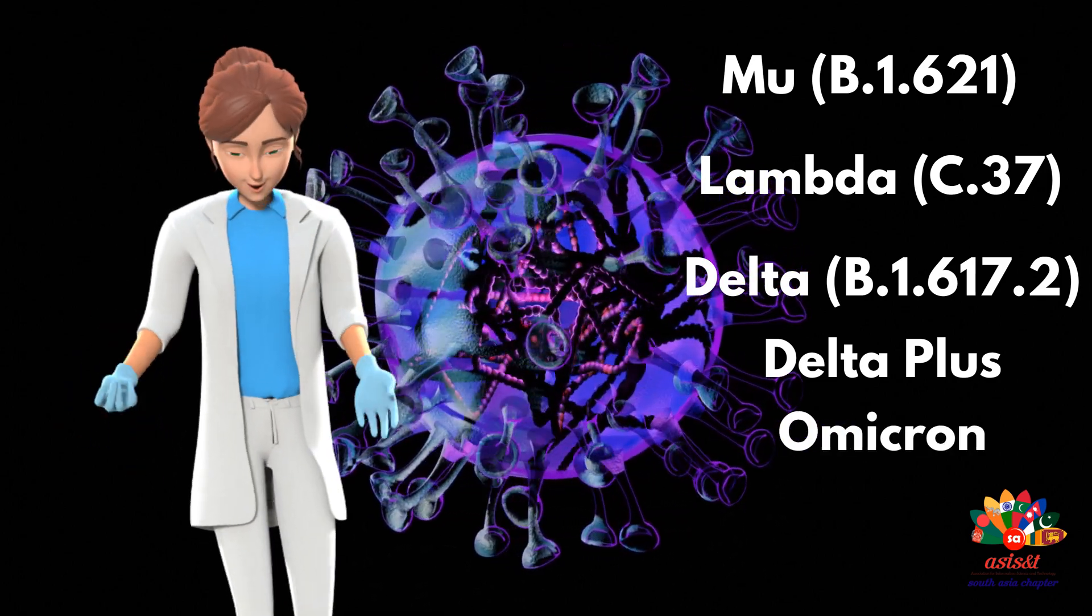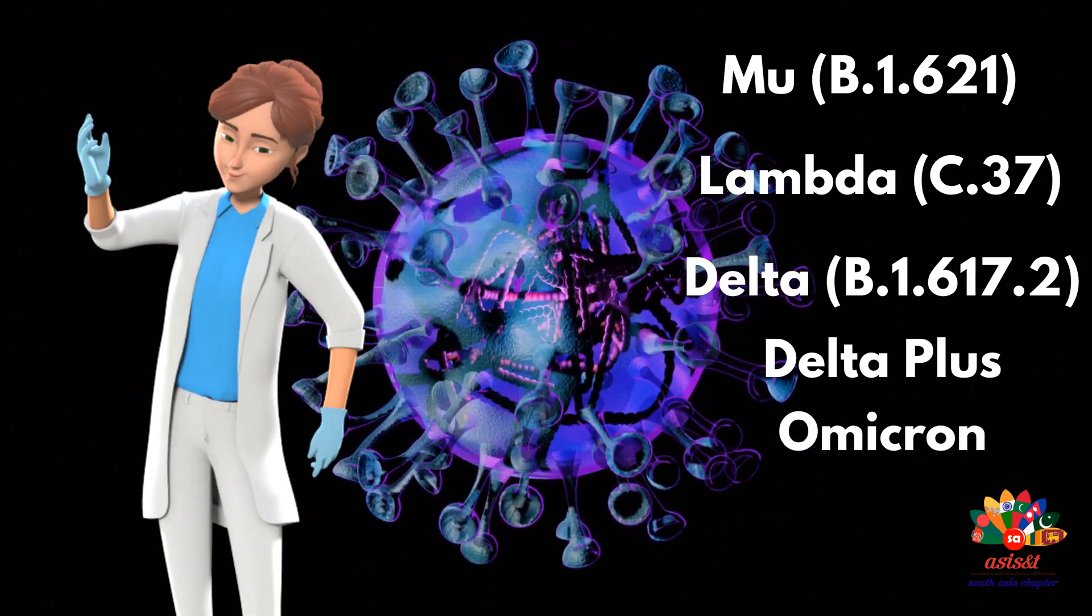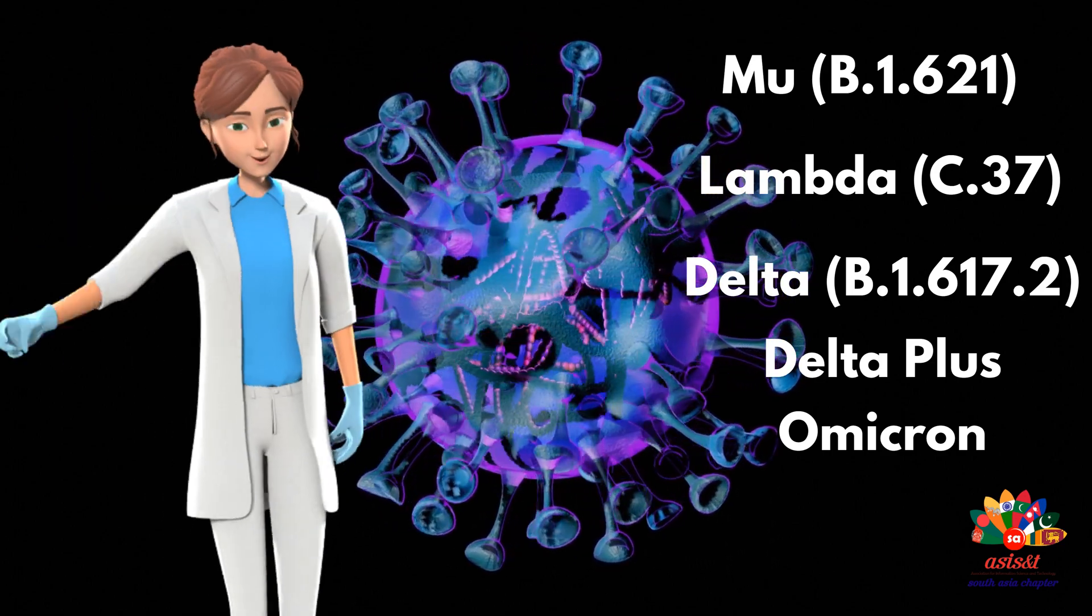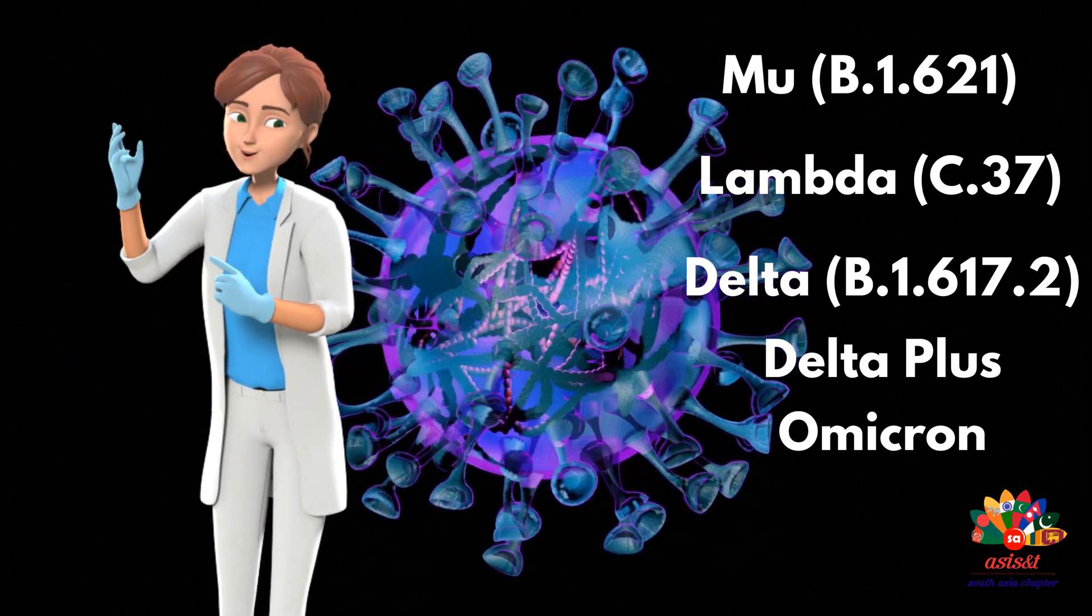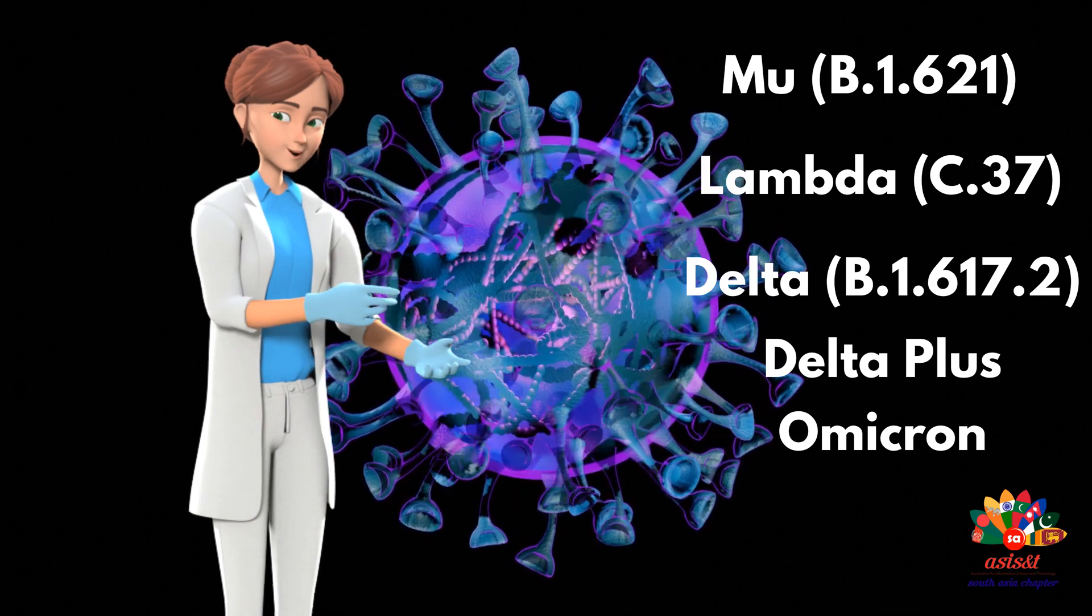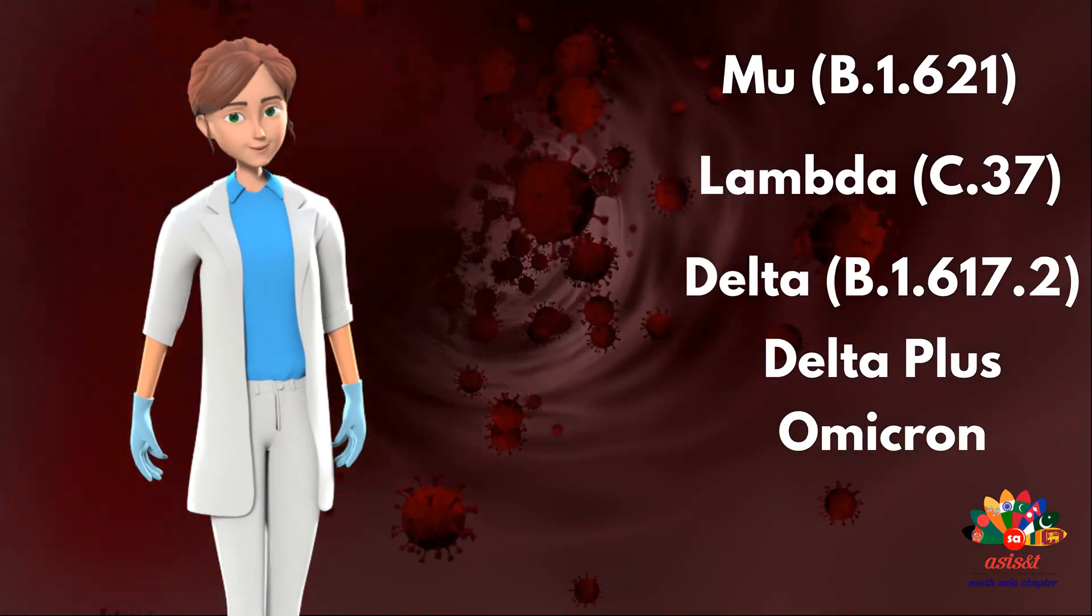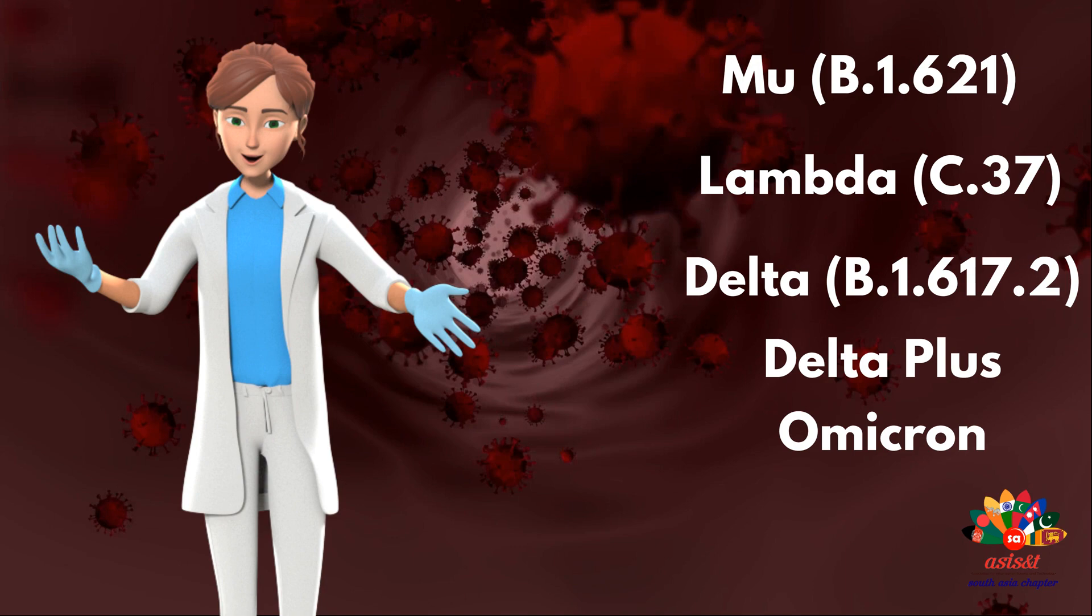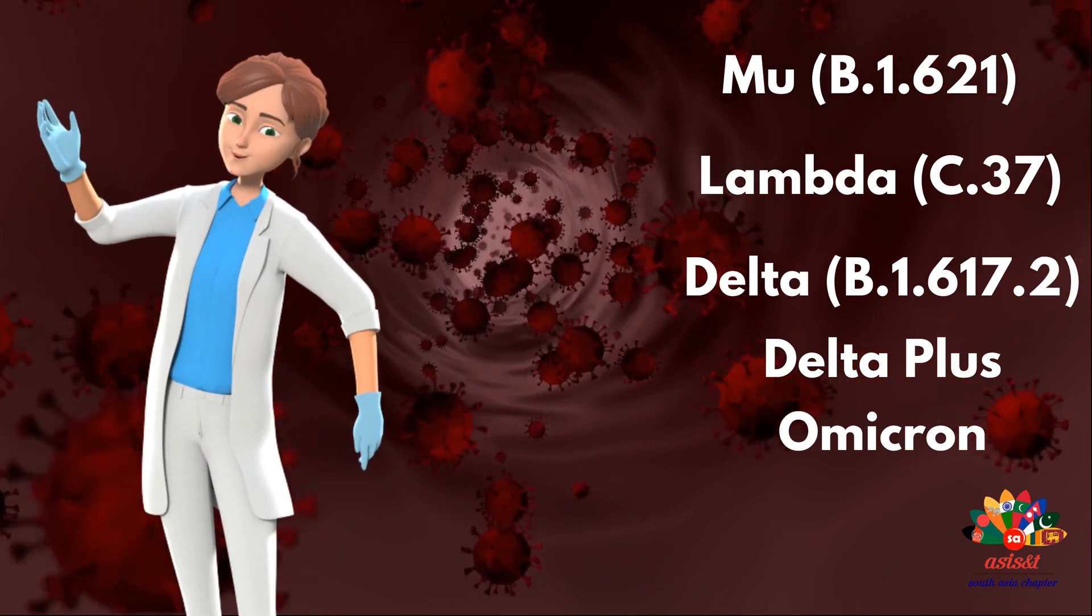Omicron is a new variant of SARS-CoV-2 that was recently reported from South Africa on November 24, 2021. This variant has shown a very large number of mutations, especially more than 30 on the viral spike protein, which is the key target of the immune response.